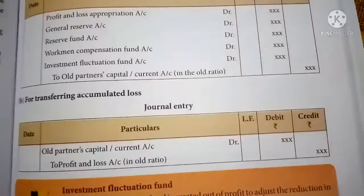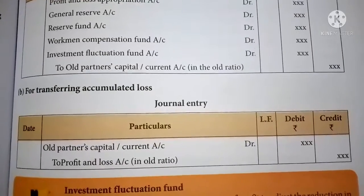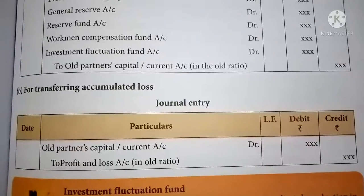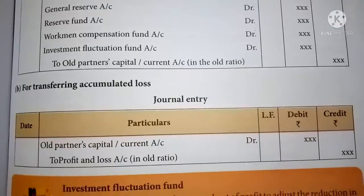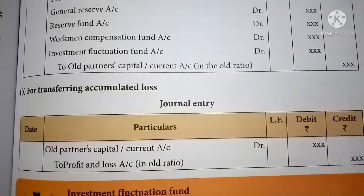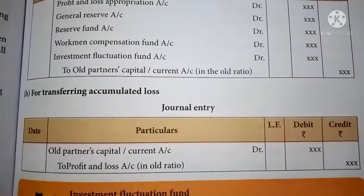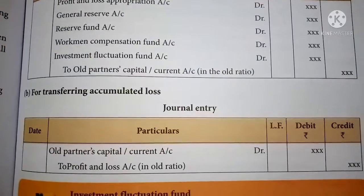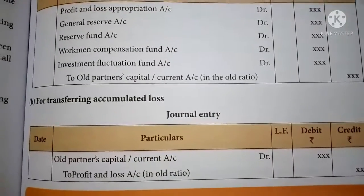And if there is any accumulated loss, that accumulated loss should be transferred to the old partners' capital account in the old profit sharing ratio. The entry is: old partners' capital account Dr., or old partners' current account Dr., to profit and loss account. These are the entries to be passed in order to transfer accumulated profit and loss, reserve, reserve fund, workman compensation fund, and investment fluctuation fund.